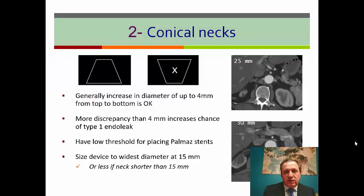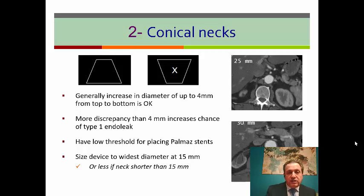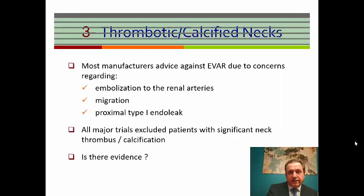We've talked about the short neck. What about the conical neck? By definition, it is an increase in diameter from the top to the bottom of the neck of more than 4 mm. This increases the risk of type 1A endoleak. How do we treat it? We have a low threshold for placing a Palmaz stent, and we size the device diameter to the widest diameter — usually at 15 mm of the neck.